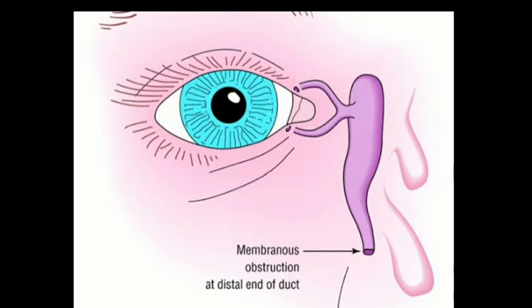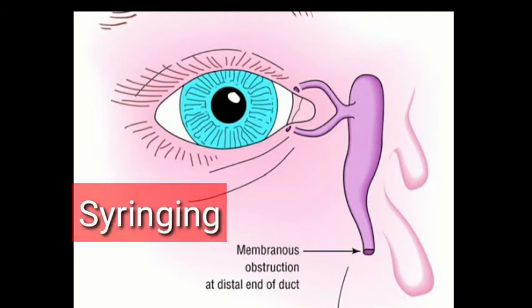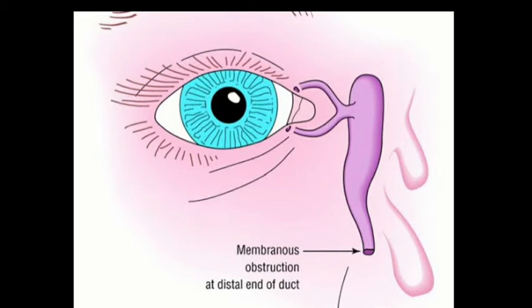The next modality of treatment is syringing, similar to lacrimal syringing explained in my previous video. Here, saline is injected from the lower punctum, filling the lacrimal sac, and the pressure from the saline overcomes the obstruction. Syringing can be done once a week or once in two weeks, and you can wait for improvement in symptoms.